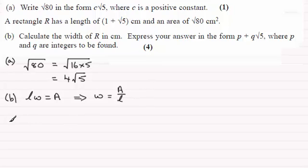And so that means that for this question we've therefore got that the width, let's just put it down here, the width will be equal to the area which we're told is root 80, square root of 80, and that is divided by the length, and the length we're given as 1 plus root 5.